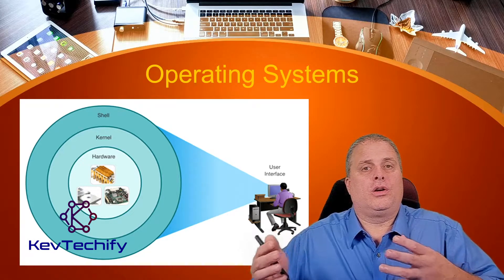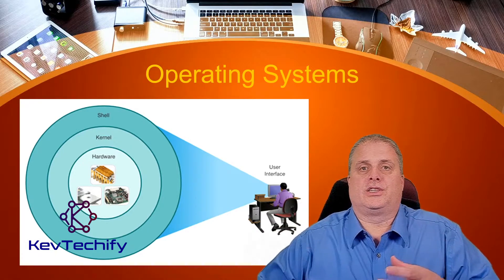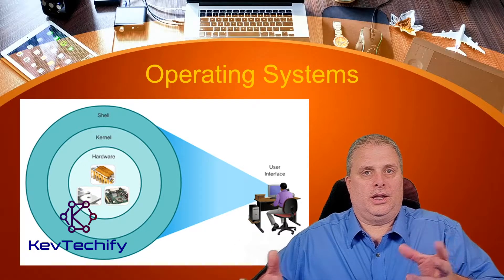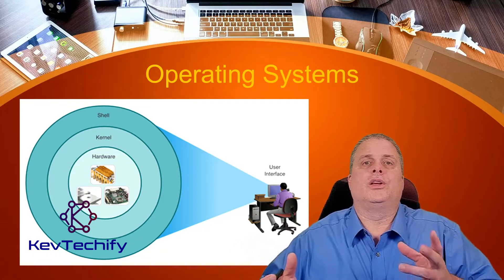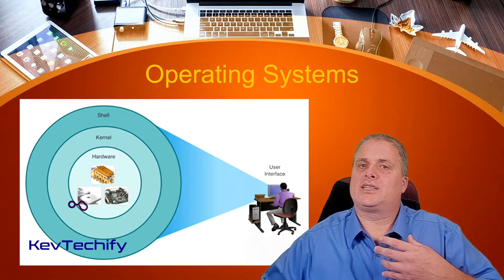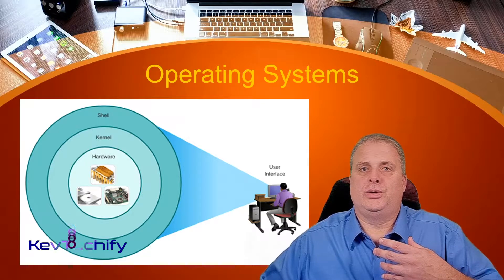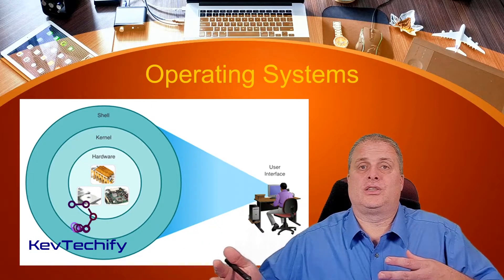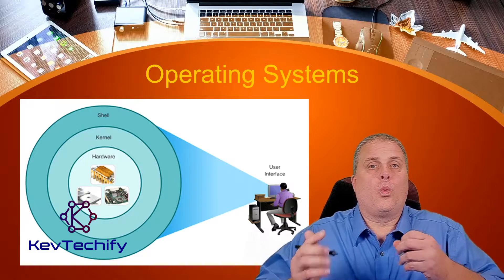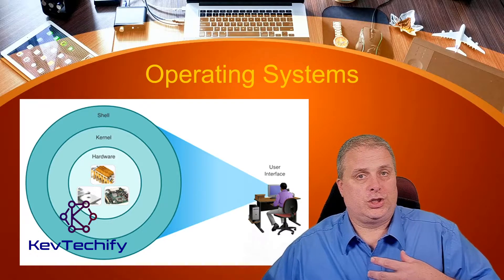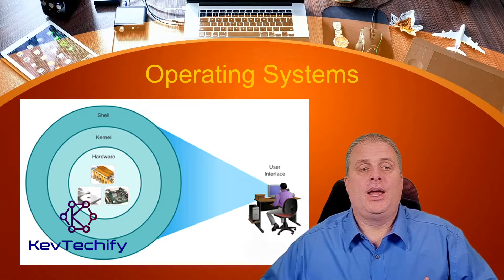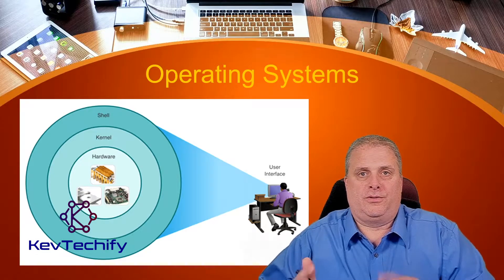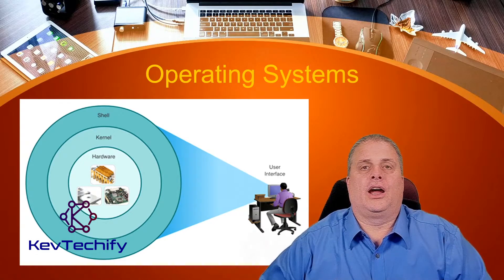In order for the operating system to communicate with the hardware, we run the kernel. The kernel is the communication layer — it controls access to the hardware and to the operating system. It determines what functions should happen and what functions could happen. It's the gatekeeper for getting to the hardware.